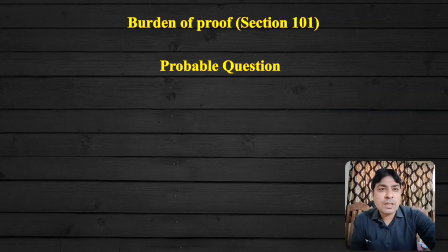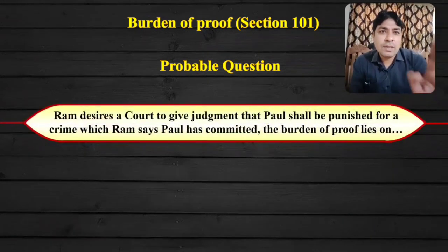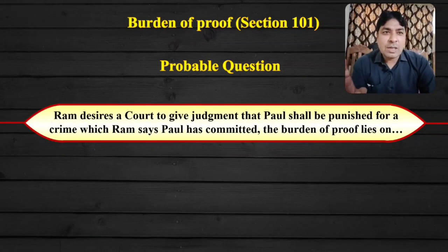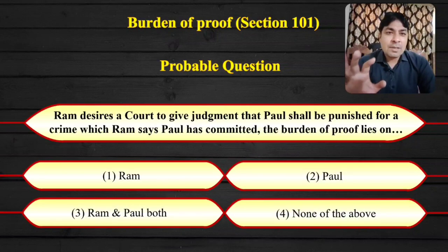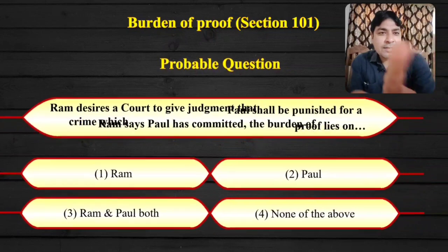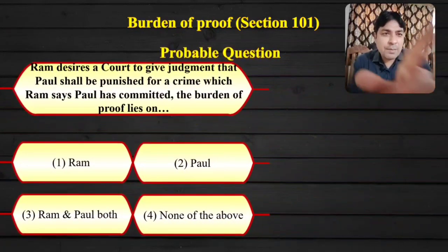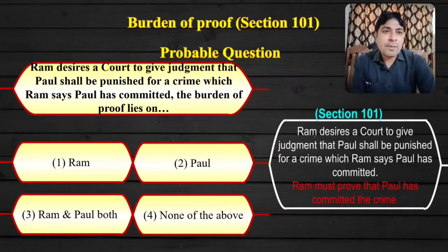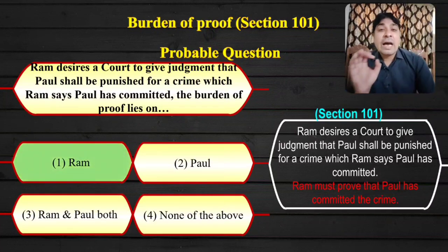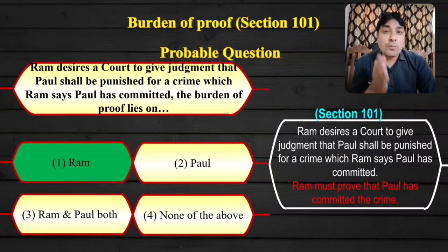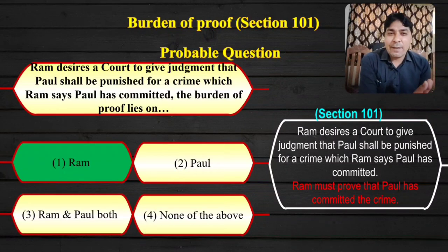Now the probable question on Section 101: Ram desires a court to give judgment that Paul shall be punished for a crime which Ram says Paul has committed. The burden of proof lies on — Ram / Paul / Ram and Paul both / none of the above? The correct answer is the first option: Ram is having the burden of proof to prove that Paul has committed the crime.